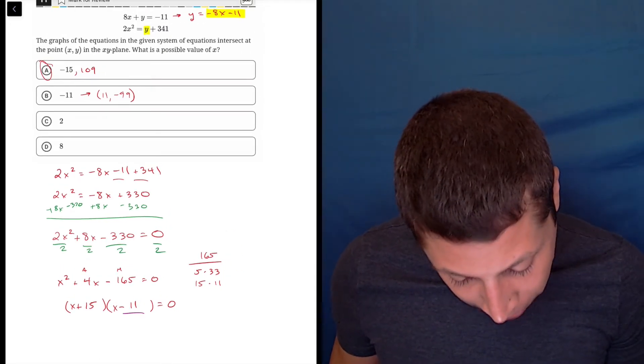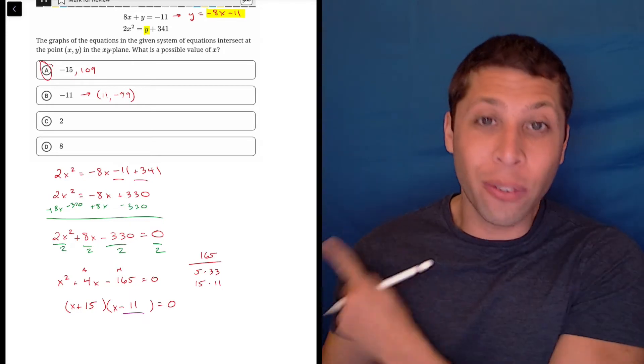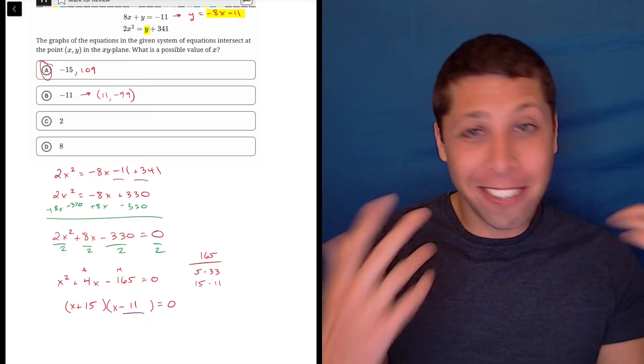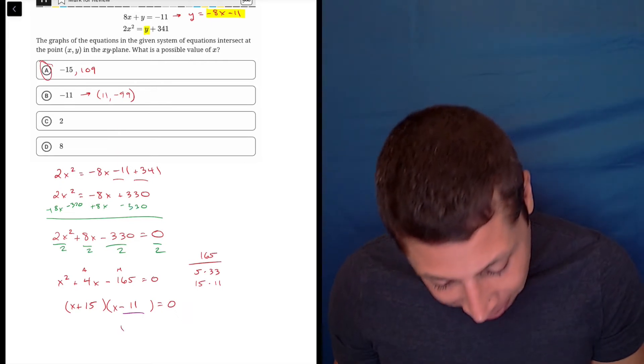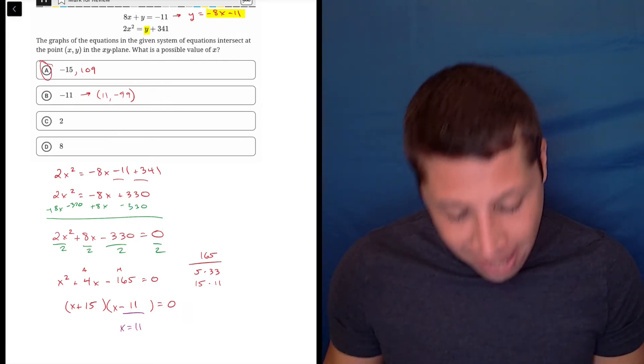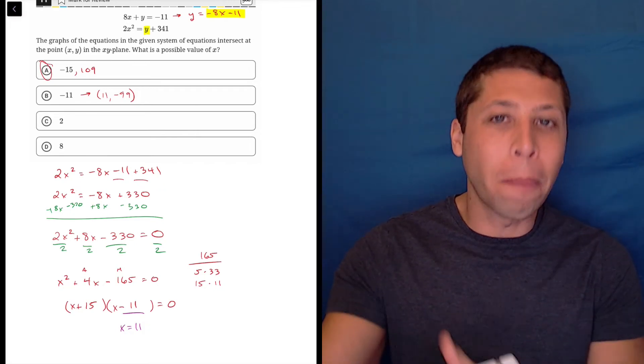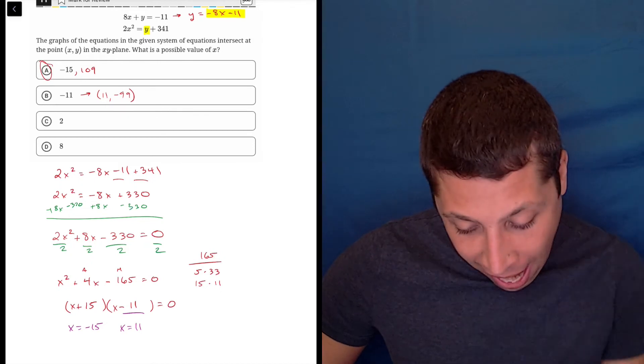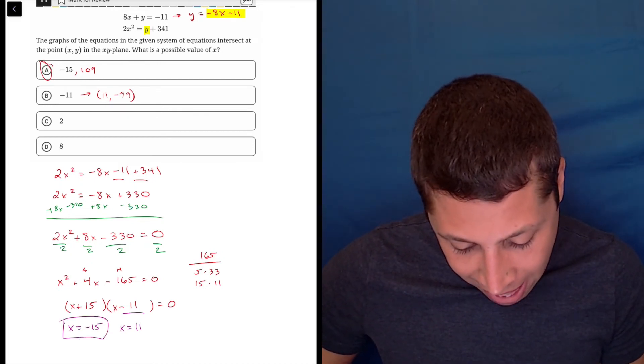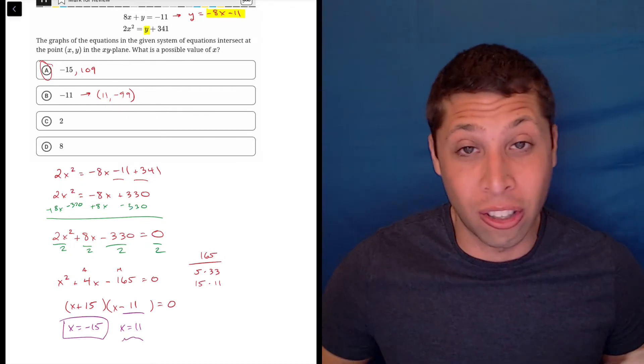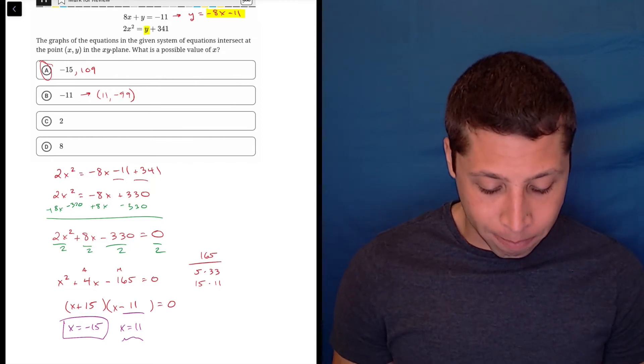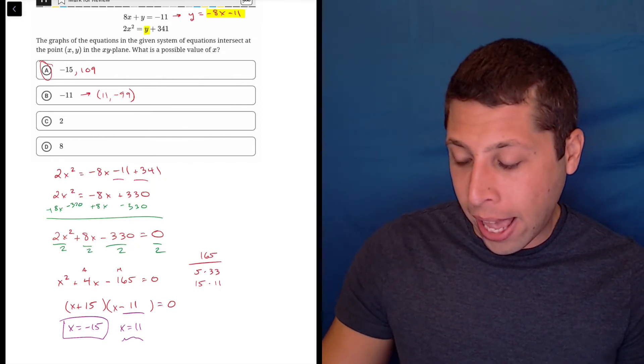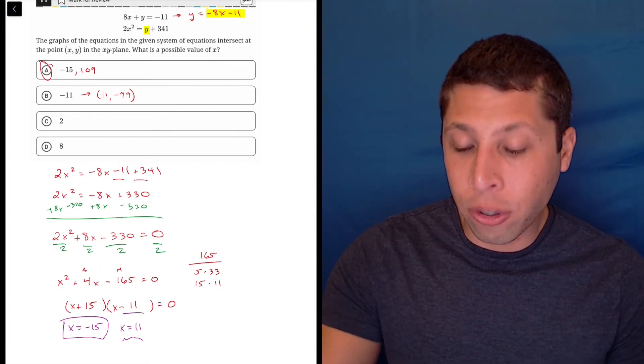Well, some people are going to get confused and do all this factoring and see the negative 11 and just pick that and forget that you have to finish the job, right? This factor tells me that x is equal to positive 11. And this one tells me x is equal to negative 15. And because that's the answer, that's the one that counts. This one isn't wrong. It's just not an answer choice. And so this is why. The reason I showed you all this algebra is to show you why the traps exist, choices like B.